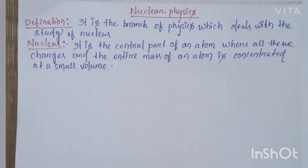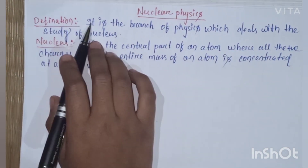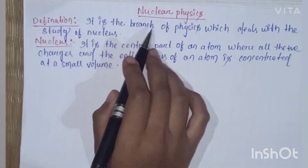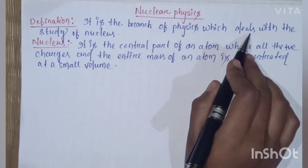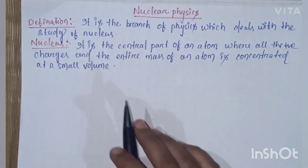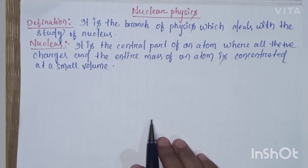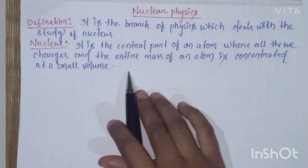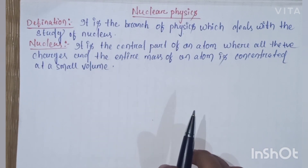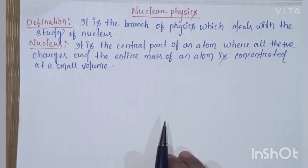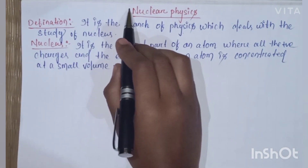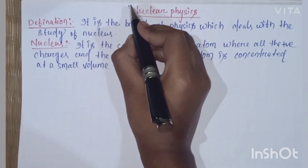Hello students, welcome to my channel. Today we are going to discuss nuclear physics. Nuclear physics is the branch of physics which deals with the study of the nucleus. In atomic physics, we have studied that the electron revolves around the nucleus in a fixed circular orbit, and those fixed circular orbits are called energy states and stationary states.